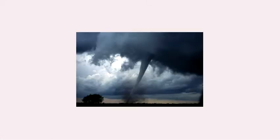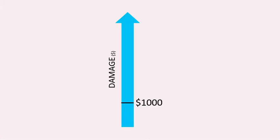Let's say one day a tornado comes along right past Amy's house, and unfortunately there are damages done to the house. We can look at the damages using a graph. You'll see that I've marked down the $1,000 deductible, and the damage can either be below $1,000 or above it.